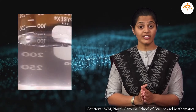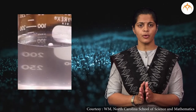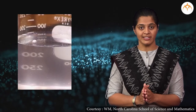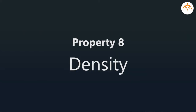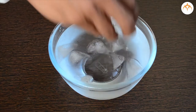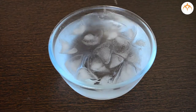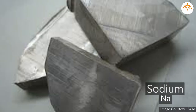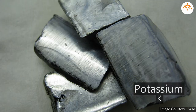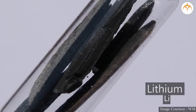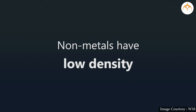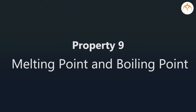We just learned about an important property of metals, which is density. You have learned about the density of water in previous standards. Metals have high density, but there are exceptions — such as sodium, potassium, and lithium. Non-metals have low densities.